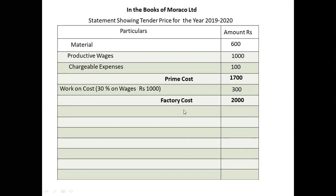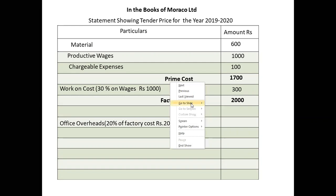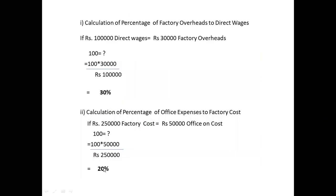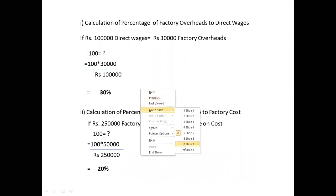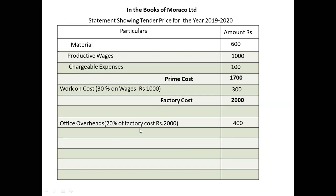Factory cost is calculated as prime cost 1,700 plus factory overhead 300 = 2,000 rupees. Then add office overheads: 20% of factory cost. 20% of 2,000 rupees = 400 rupees. Total cost = 2,000 + 400 = 2,400 rupees.